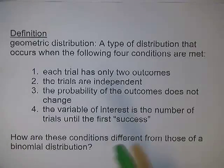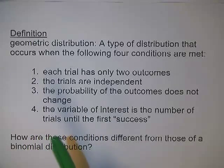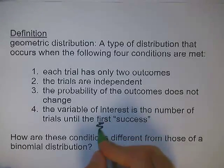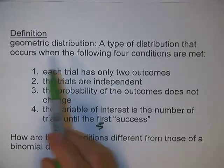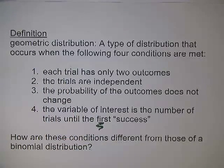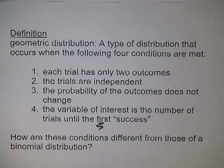So instead of counting the number of successes, we're now counting the number of trials until the first success. Once you have that first success, then you're done counting. And really that affects the first condition — for a binomial setting, you need a fixed number of trials. In a geometric distribution, you do not need a fixed number of trials because it could be one trial or it could be a thousand trials, because we're just waiting for that first success to come.